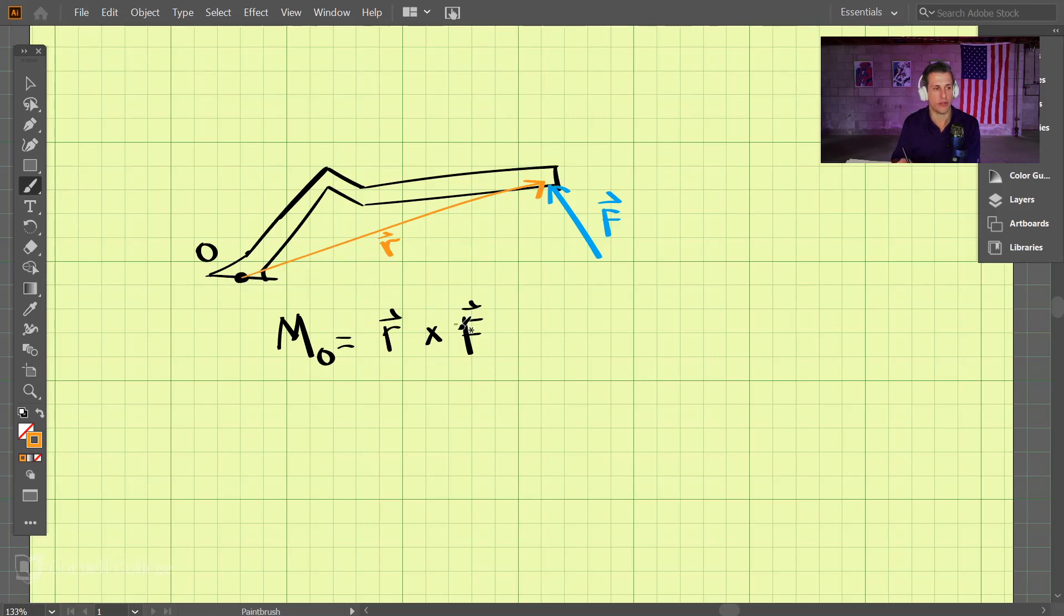We would find that r vector by using position vectors, and we would find F or we would be given F, and we could find the moment around o here. We should probably be careful because if we do the cross product here, the output is actually the moment.